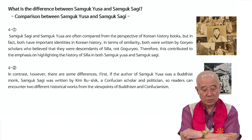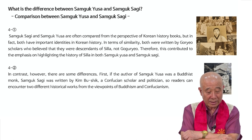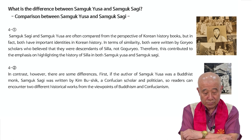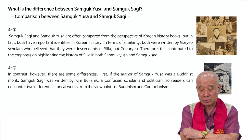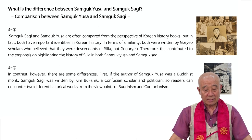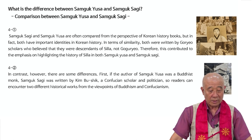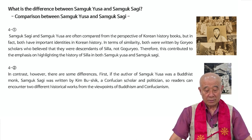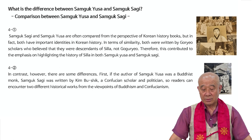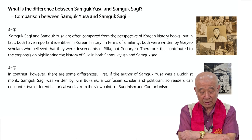Samguk Sagi and Samguk YUSA are often compared from the perspective of Korean history books. In fact, both have important identities in Korean history. In terms of similarity, both were written by Korean scholars who believed they were descendants of Silla, not Goguryo. Therefore, this contributed to the emphasis on highlighting the history of Silla in both texts.